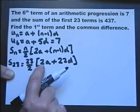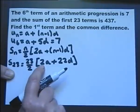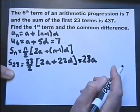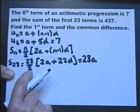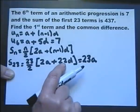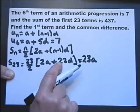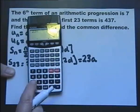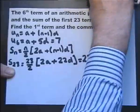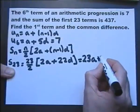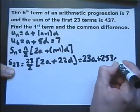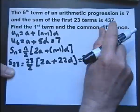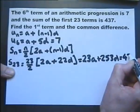Let's simplify by removing the brackets. Multiplying 23 over 2 by 2A, the 2 cancels to give 23A. Multiplying 23 over 2 by 22D, the 2 cancels giving 11D, so we get 23 times 11D. And 23 times 11 is 253, giving us 23A plus 253D, which equals 437.